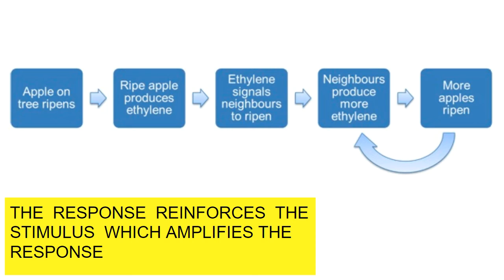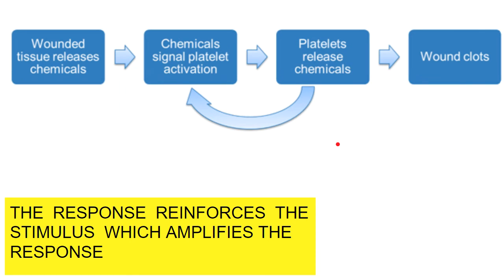One example of a positive feedback system: when an apple on the tree ripens, the ripe apple produces ethylene gas. That ethylene signals its neighbor apples to ripen, and the neighbors produce more ethylene gas, which causes more apples to ripen, which produces more ethylene gas, reinforcing the loop until all the apples ripen. Another example is the clotting of a wound through platelets — wounded tissue releases chemicals, the chemicals signal platelet activation, which causes platelets to release more chemicals, which causes more platelet activation, continuing on and on until the wound clots.